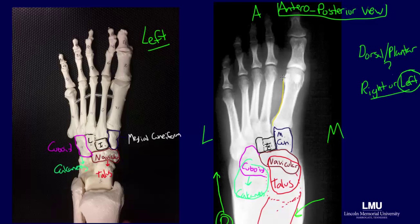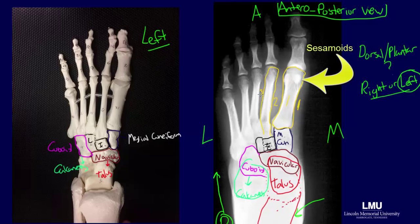The metatarsals, outlined here in yellow, articulate with the tarsal bones posteriorly and the phalanges anteriorly. Notice how the sesamoid bones are aligned under the head of the first metatarsal, within the tendon of the flexor hallucis brevis. Each of the metatarsals is numbered 1 to 5. The phalanges are the most distal bones of the foot, outlined here in orange. Notice that the first digit only has a proximal and distal phalanx, while each of the other digits has a proximal, distal, and intermediate phalanx.